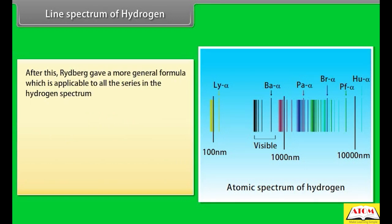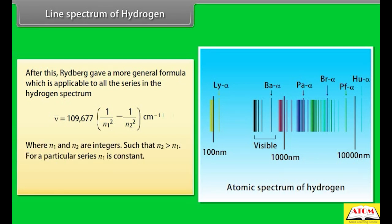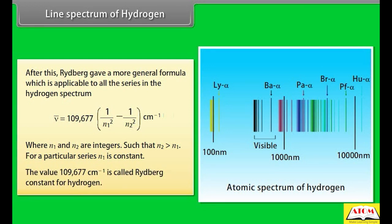Rydberg gave a more general formula applicable to all series in the hydrogen spectrum: wave number = 109,677 × (1/n₁² − 1/n₂²) per centimeter, where n₁ and n₂ are integers such that n₂ > n₁. For a particular series, n₁ is constant. The value 109,677 per centimeter is called the Rydberg constant for hydrogen.